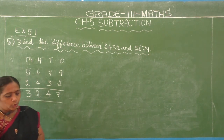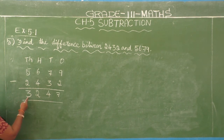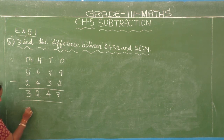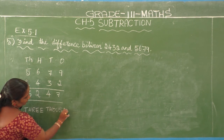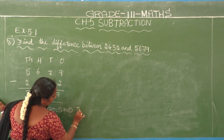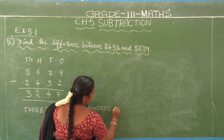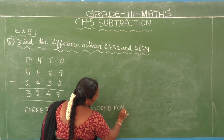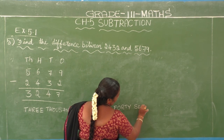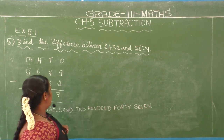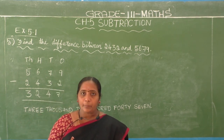We found the difference as 3247. Now write the answer in words — they are asking for the number name. 3247 is three thousand two hundred and forty-seven. Note: the spelling for 40 is F-O-R-T-Y, not F-O-U-R-T-Y. Exercise 5.1 is now completed.